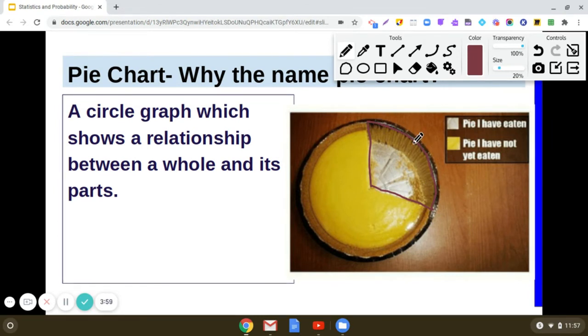If you see this portion which I have marked here, this is representing a sector of a circle showing the portion which has been eaten up. The remaining portion is also a sector representing the part of the pie which is not yet eaten up.